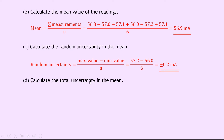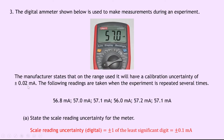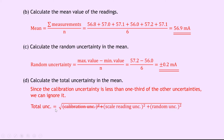Lastly, part D says to calculate the total uncertainty in the mean. In this case, because our calibration uncertainty is less than one third of the other uncertainties, that means we can ignore it. To show that: our calibration uncertainty was plus or minus 0.02 milliamps, our scale reading uncertainty was plus or minus 0.1 milliamps — so the calibration uncertainty is definitely less than a third of that — and our random uncertainty was plus or minus 0.2 milliamps compared to plus or minus 0.02 milliamps for the calibration uncertainty. We then write down our relationship: total uncertainty is equal to the square root of the scale reading uncertainty squared plus the random uncertainty squared. I've removed the calibration uncertainty because we don't need it.